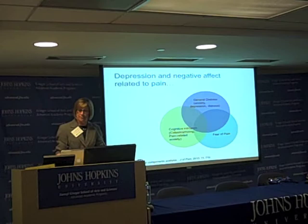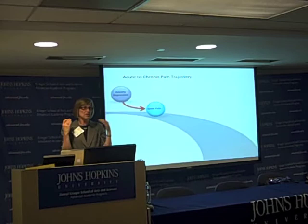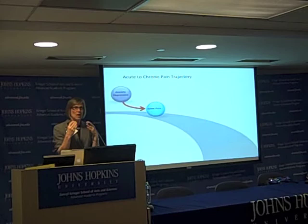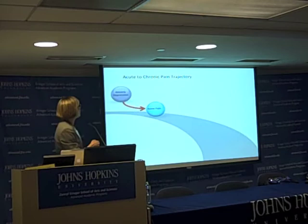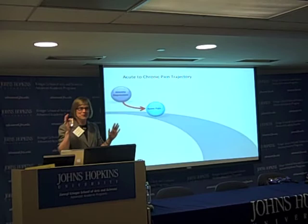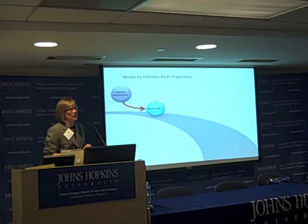Most people come to the experience of pain with some historical experiences of pain. When somebody has a persistent pain condition, they've had some sort of acute pain condition first. A lot of what we do in this literature is study the various parts of the trajectory as people go from acute to chronic pain. The literature has a lot of complexity — we're dealing with human beings and clinical populations with lots of moving parts — but there is real convergence of certain factors across many different studies.